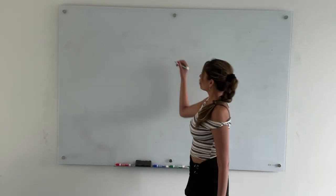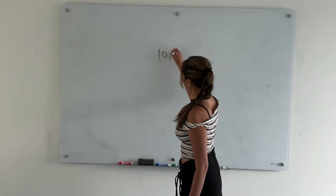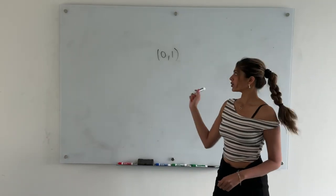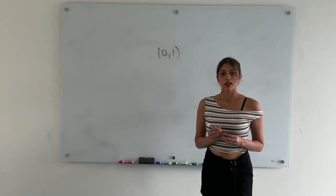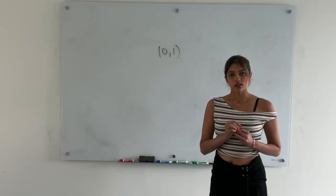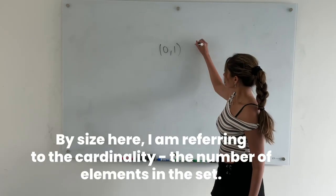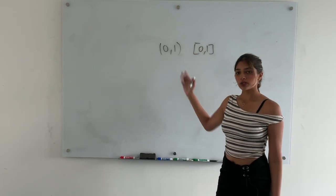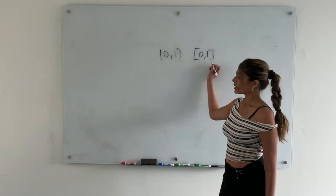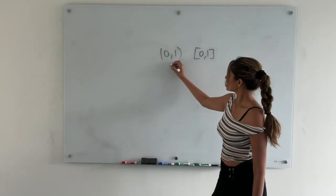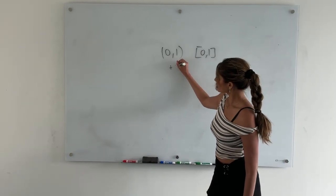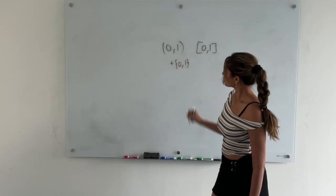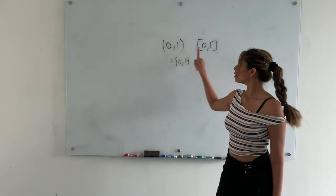I want you to consider the open interval (0, 1). This set contains all the real numbers from 0 to 1. What is the size of this interval? If you compare it to the closed set [0, 1], how would they compare? The closed set [0, 1] is basically this set plus 0 and 1. So the open set does not include 0 and 1, but the closed one does.